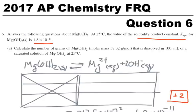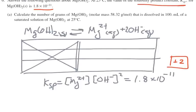Calculate the number of grams of magnesium hydroxide, molar mass is 58.32, that is dissolved in 100 milliliters of a saturated solution of magnesium hydroxide at 25 degrees. Well, here's our equation. Just the fact that it says KSP, that implies magnesium hydroxide dissociating into ions slightly.